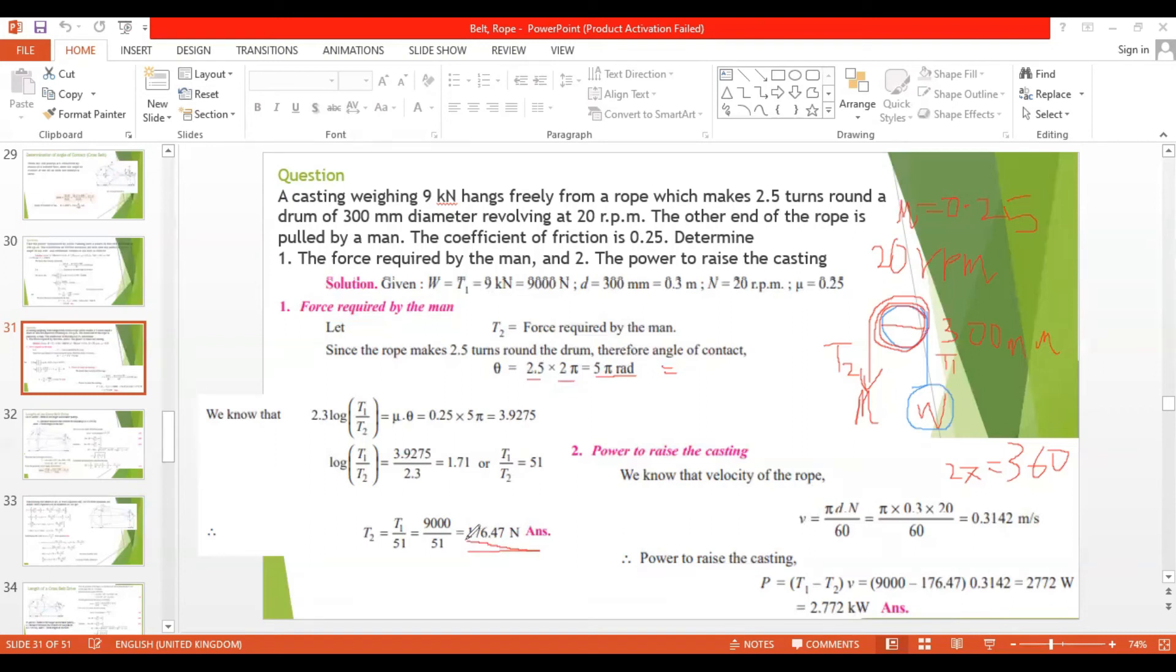Now we need to find the power to raise the casting. Here we are going to exert some more force, then only it will move up. We know that the velocity of the rope v equals pi dn by 60. For power, the equation is: T1 minus T2 into v. So we need to find T1, T2, and v. T1 is given, T2 we have already found.